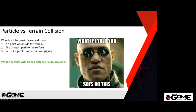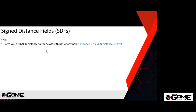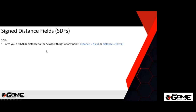Signed distance fields, just like the name implies, give you a signed distance to the closest surface at any point. In 2D, distance is a function of X and Y; in 3D you plug in X, Y, Z and get a floating point distance. If you take the gradient at a point and normalize that gradient, it gives you the direction toward the closest surface — that tells us which direction to escape out of the terrain. The distance tells us how far to go along that direction.